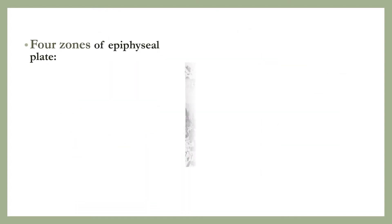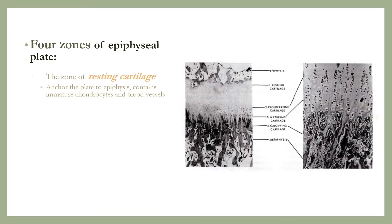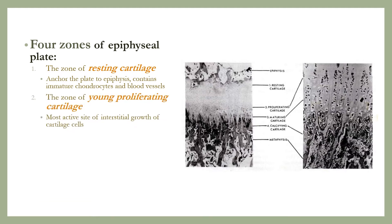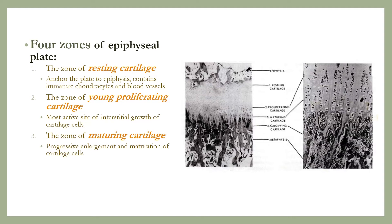There are four zones of the epiphyseal plate. First, the zone of resting cartilage, which anchors the epiphyseal plate to the epiphysis and contains immature chondrocytes and blood vessels. Second, the zone of young proliferating cartilage, the most active site of interstitial growth of cartilage cells. Third, the zone of maturing cartilage, which reveals progressive enlargement and maturation of cartilage cells. Fourth, the zone of calcifying cartilage, which contains dead chondrocytes and calcified matrix.